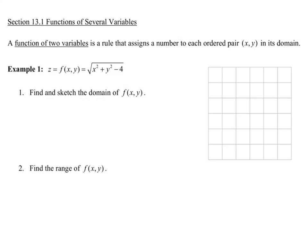A function of two variables is a rule that assigns a number to each ordered pair (x, y) in its domain. What you've seen before is single variable functions where you have a domain with just a single variable x and a range with a single variable y. Here, our domain is going to be from the xy-plane, and our range will be the z value of the function.